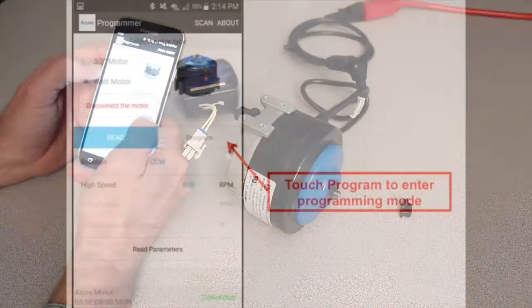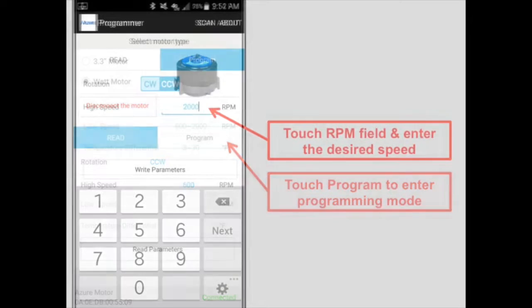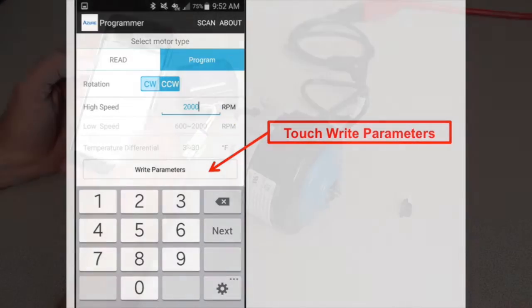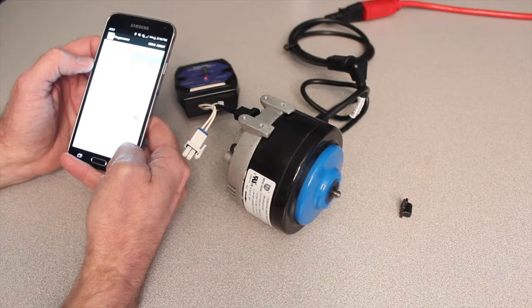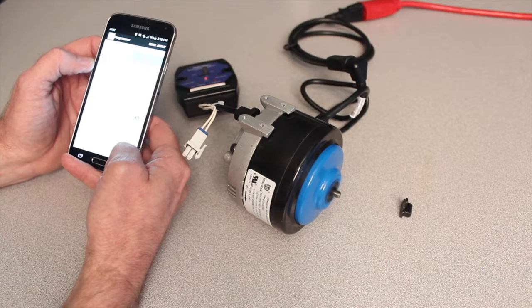We'll reprogram this for 2,000 RPM. Write parameters. Motor stops. And it's going to turn back on again at 2,000 RPM. And you can hear it spinning faster.